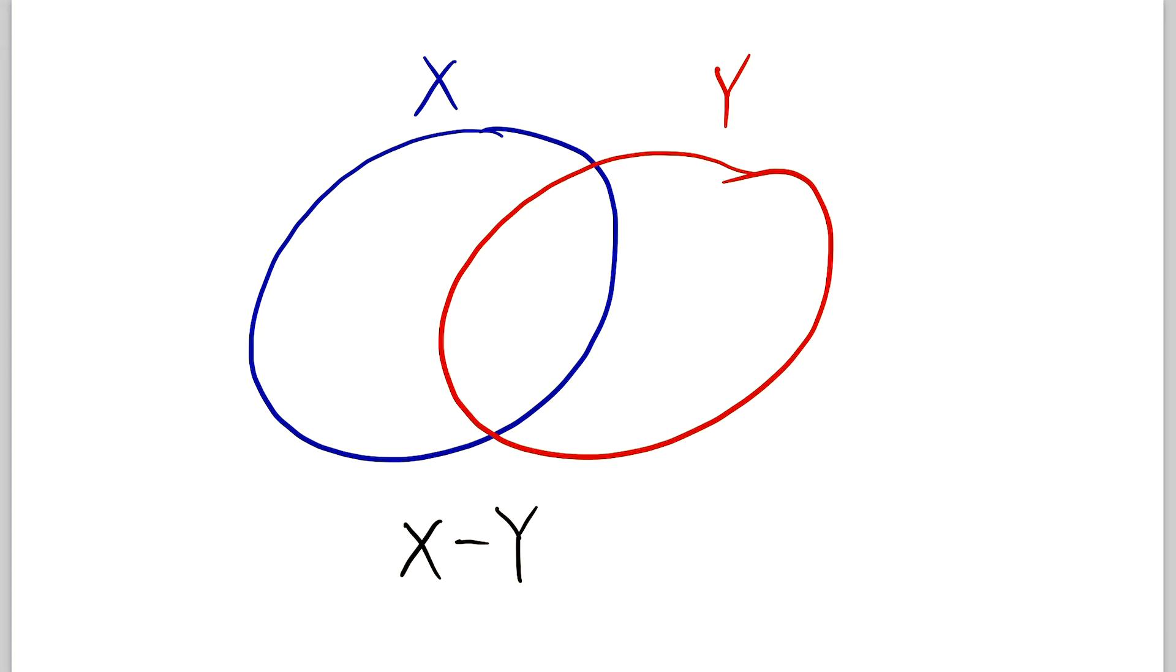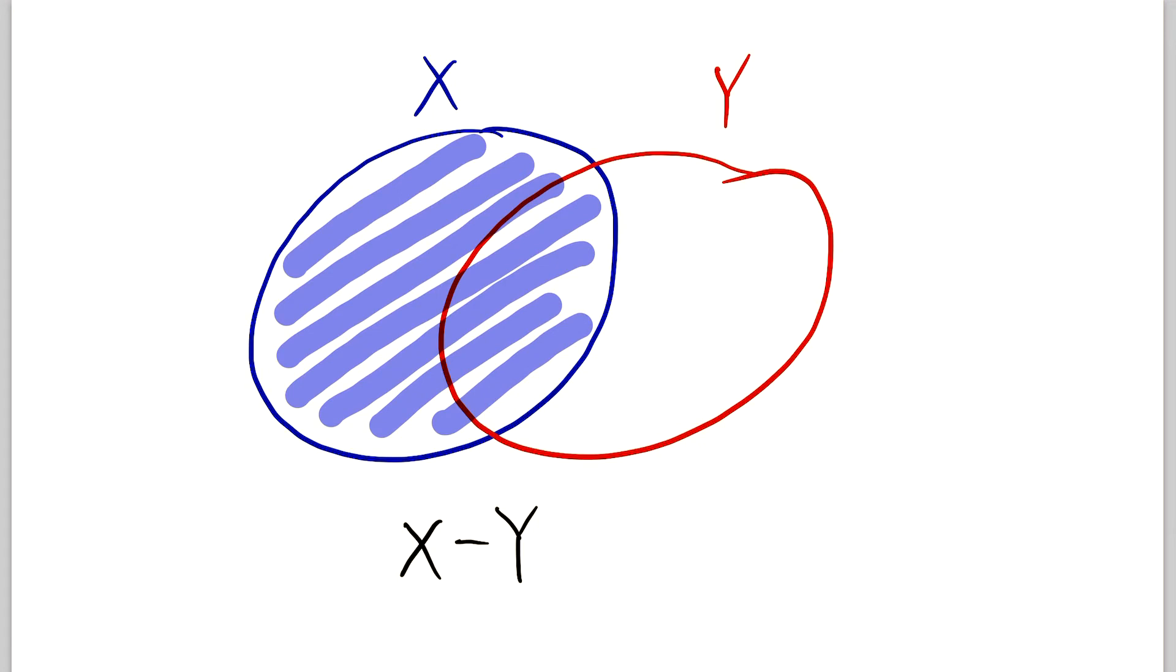Well, we know elements of X minus Y have to be in X. So for starters, let's just shade every element of X. That's everything in this blue circle here.